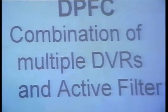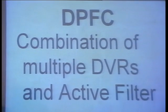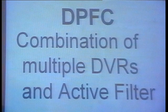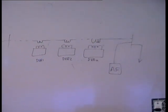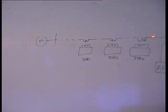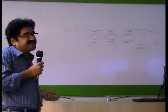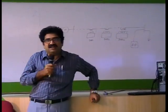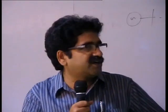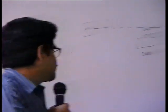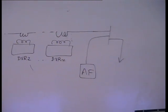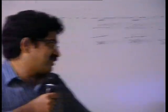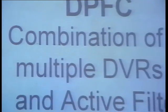Recently there is a paper on a Distributed Power Flow Controller (DPFC). It is a combination of multiple DVRs and one active filter to supply the harmonics. If the transmission line is long — say 400 kilometers — one DVR is not enough, so you may need multiple DVRs to compensate the voltage drop. A controller combining multiple DVRs and an active filter is called DPFC, and the latest paper on this came in 2012. All these come under the third generation FACTS controllers.